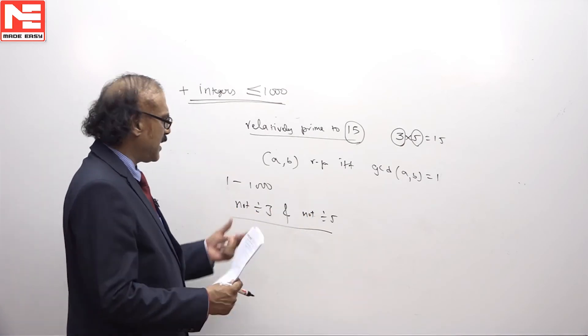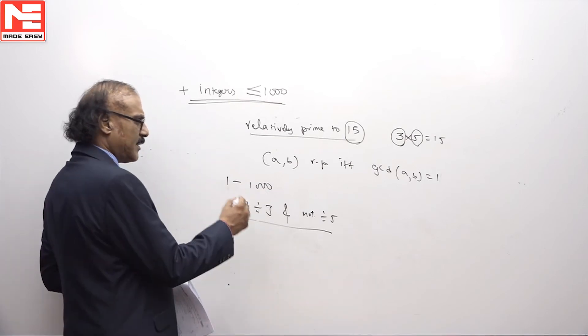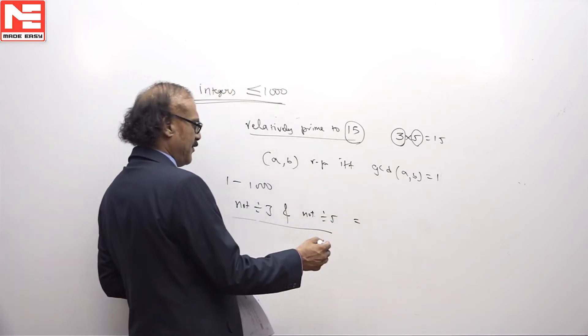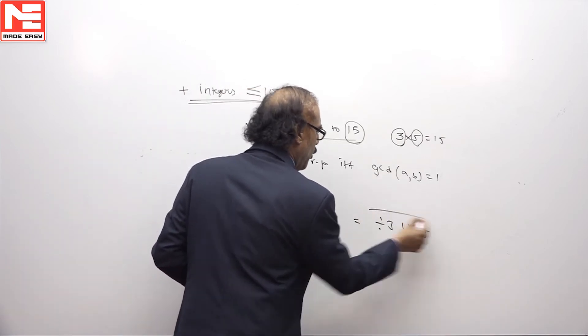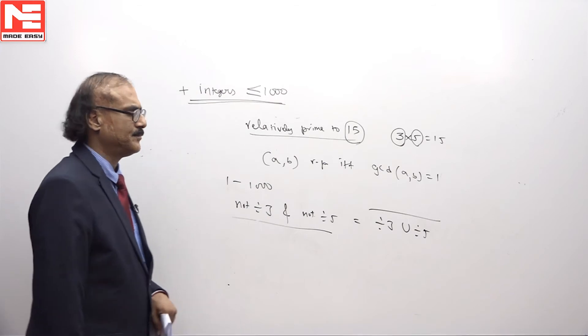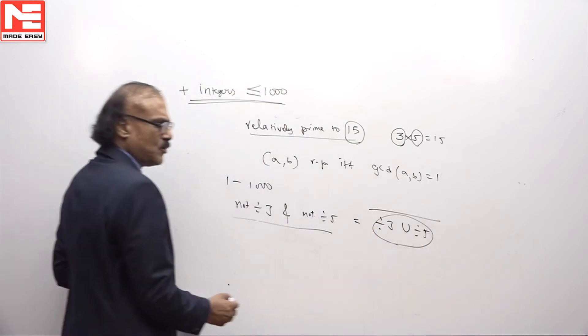Directly doing this is difficult because it's a negative counting problem. So we will write this as the complement of divisible by 3 or divisible by 5, whole complement by De Morgan's law, and this can be counted by inclusion-exclusion principle.